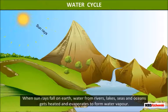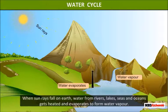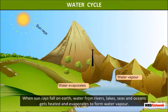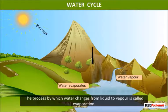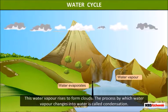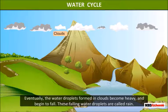Water cycle: when sun rays fall on earth, water from rivers, lakes, seas, and oceans gets heated and evaporates to form water vapor. The process by which water changes from liquid to vapor is called evaporation. This water vapor rises to form clouds. The process by which water vapor changes into water is called condensation.